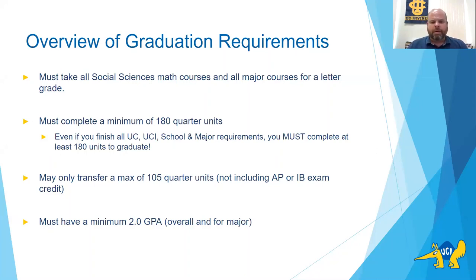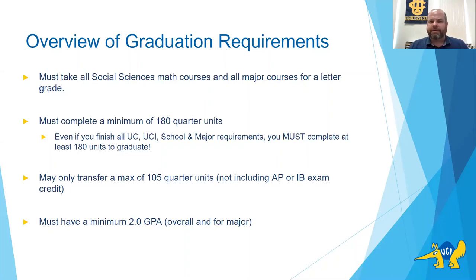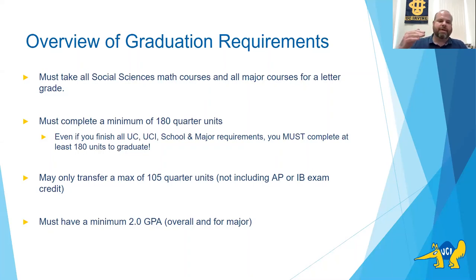Every student, regardless of major, has to complete at least 180 quarter units to graduate from UCI. For example, if you're an econ major and have completed all your major requirements but still have about 12 units left to reach 180, you need to take other courses — either within your major or elective courses in different areas. You can go above 180 units if you'd like, but you must have at least 180 to graduate.